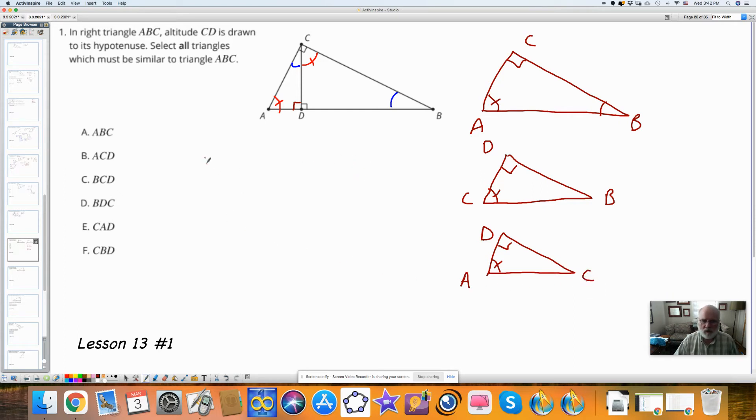So now we can write the triangles that are similar. ABC is similar to CBD, which is similar to triangle ACD. So my answers are ACD and CBD. Those are the only two. And I found it by separating the triangles.